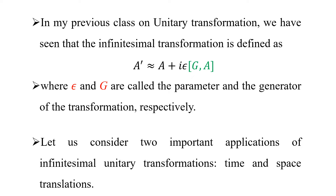In the previous class on unitary transformation we have seen that the infinitesimal transformation is defined as: a prime, the new operator a prime, is equal to a plus i·epsilon times the commutation of g with a. Here a is the original operator, epsilon is a parameter, and g is the generator respectively. So a prime can be defined as a plus i·epsilon times the commutator of g with a.